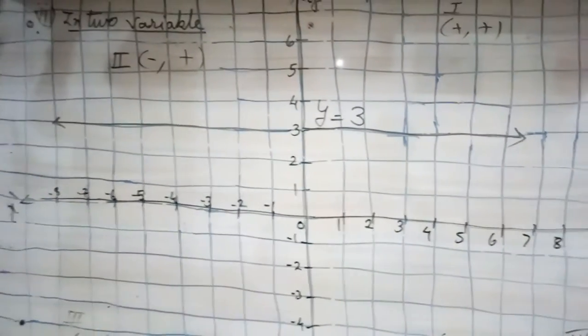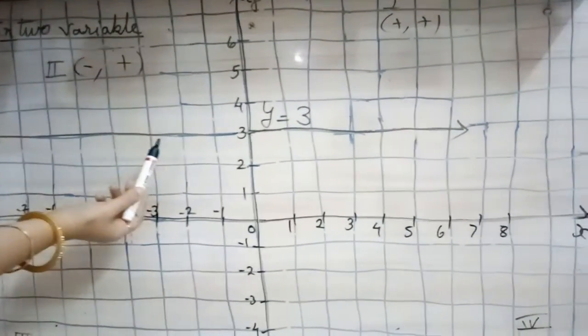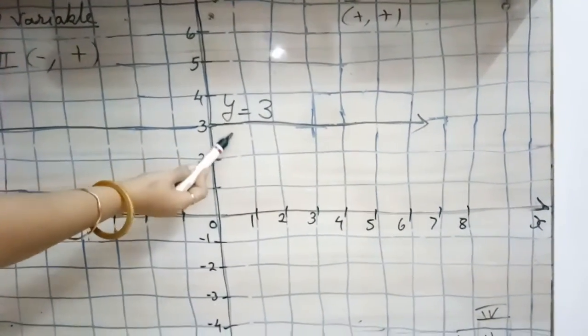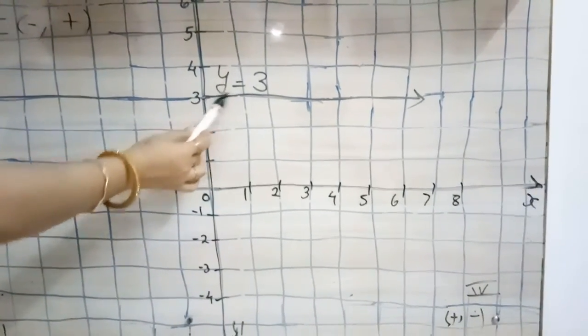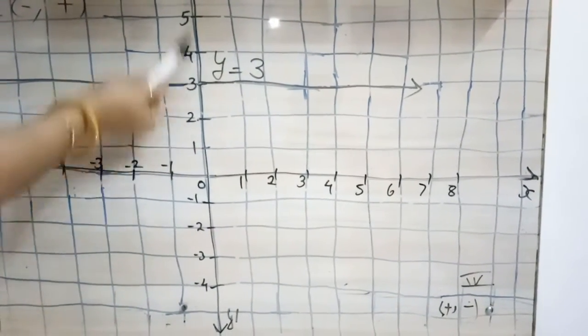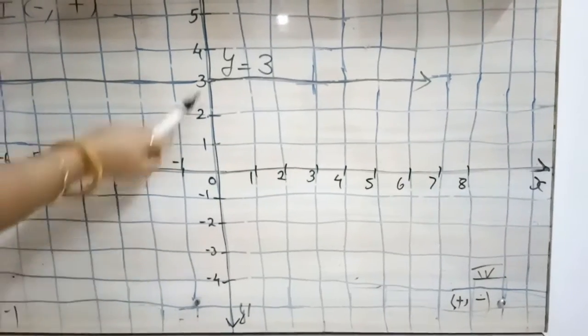Till infinity, endlessly, it will keep on moving. So when we have to represent the equation in two variables when one variable is not there, suppose y equals 3, we plot on a graph.